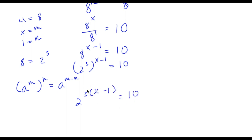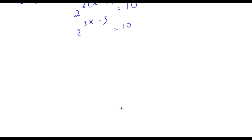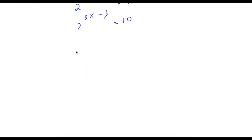We need to simplify this by distributing the 3. So this becomes 2 to the power of 3x minus 3, which equals 10. Now I'm going to take the log of both sides.